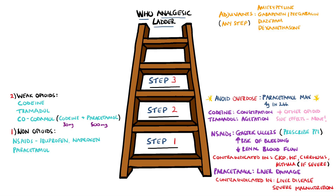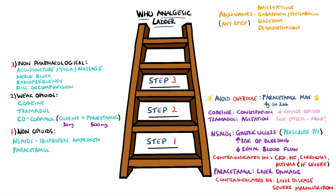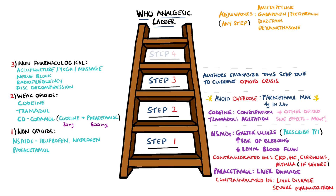In step 3, this is the largest difference between the older ladder and the modified one. These are non-pharmacological interventions, and they're emphasised here. Integrative therapies like acupuncture, massage and yoga can be considered at any step. But if you've exhausted non-opioids, weak opioids, and integrative therapies are not working, then minimally invasive interventional therapies may be considered — things like nerve blocking, radiofrequency and disc decompression. The authors highlight the opioid crisis as the reason these methods are recommended. Remember that the modified ladder is talking most specifically about chronic non-cancer pain, so for cancer pain and acute pain, these methods may not be considered.